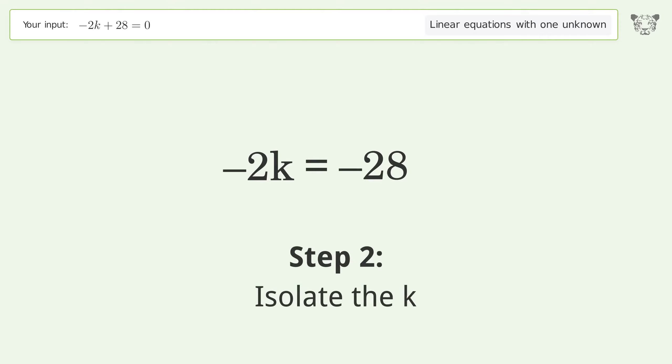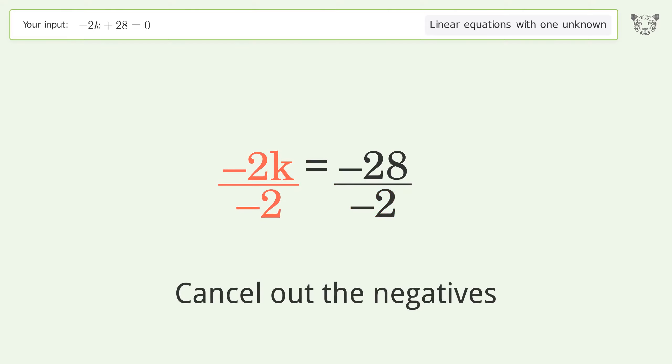Isolate the k. Divide both sides by negative 2. Cancel out the negatives.